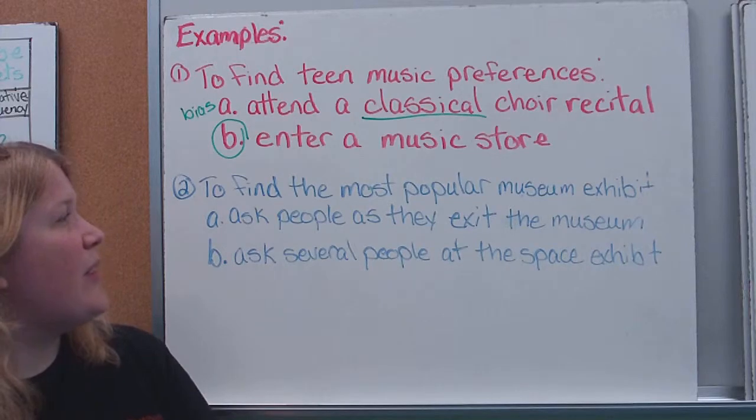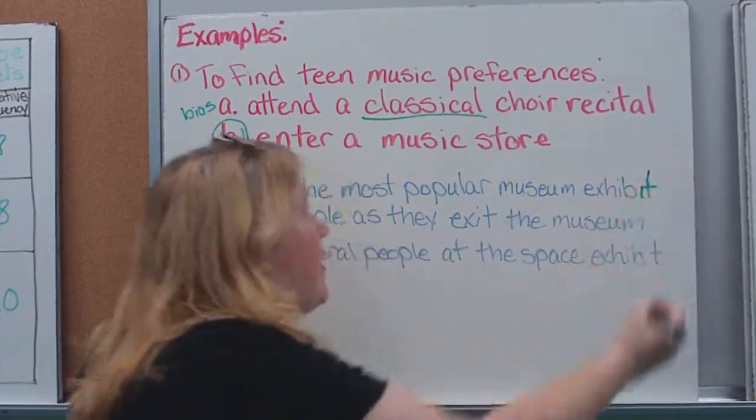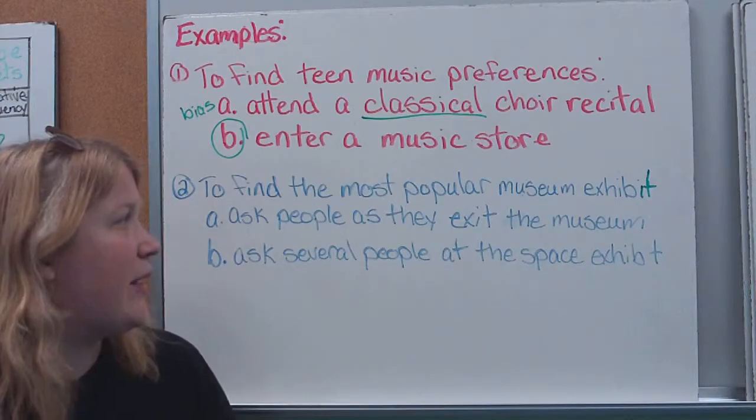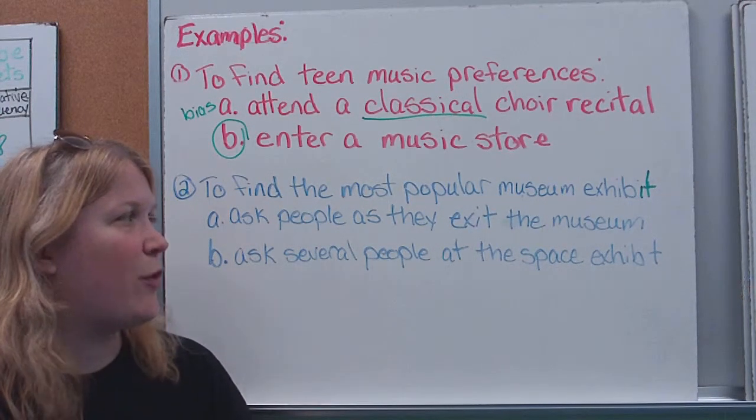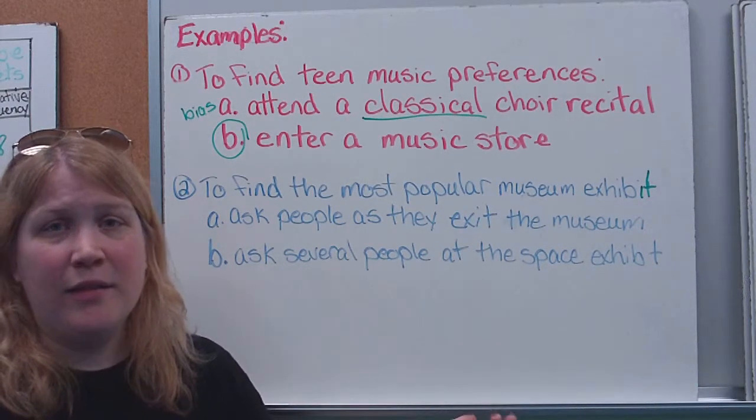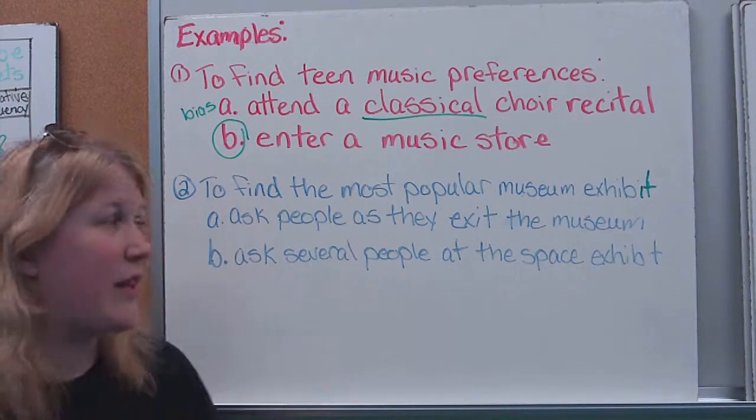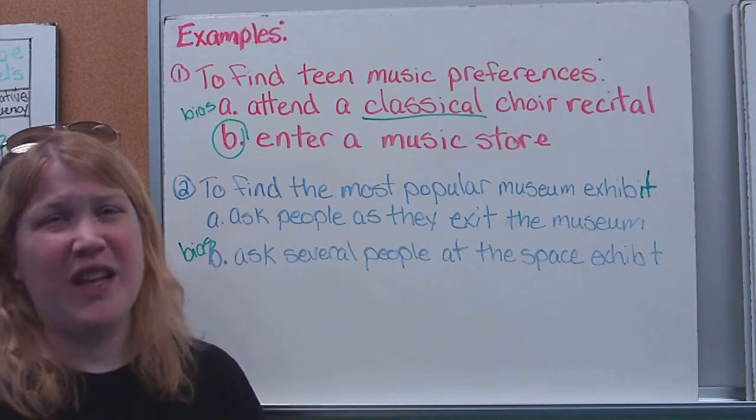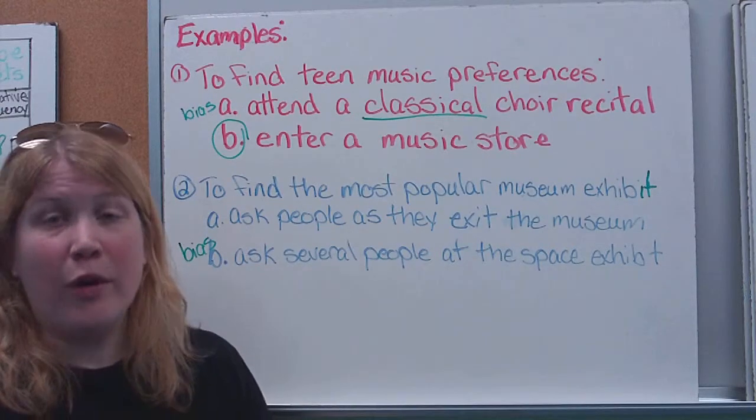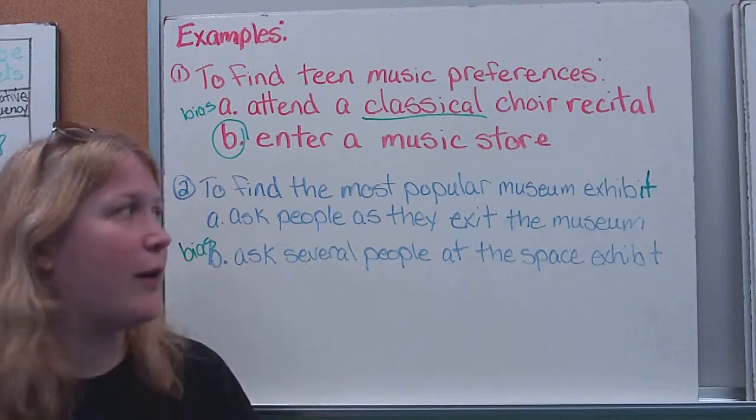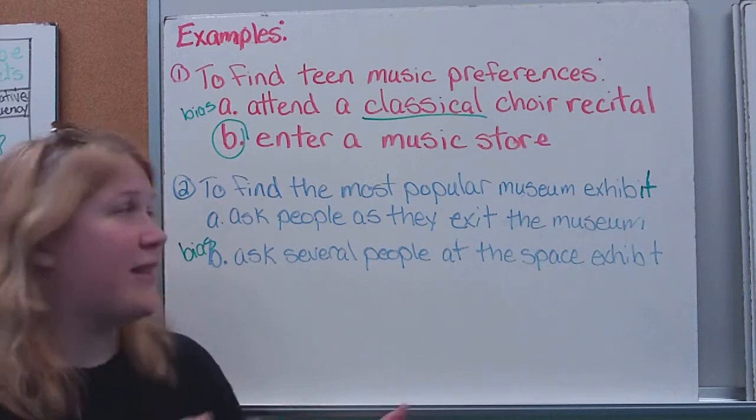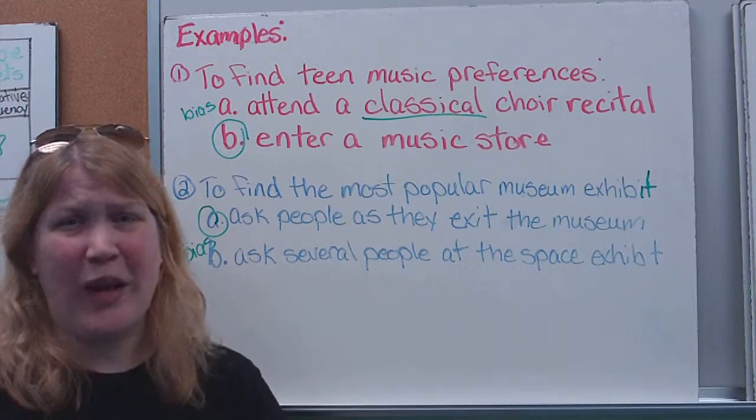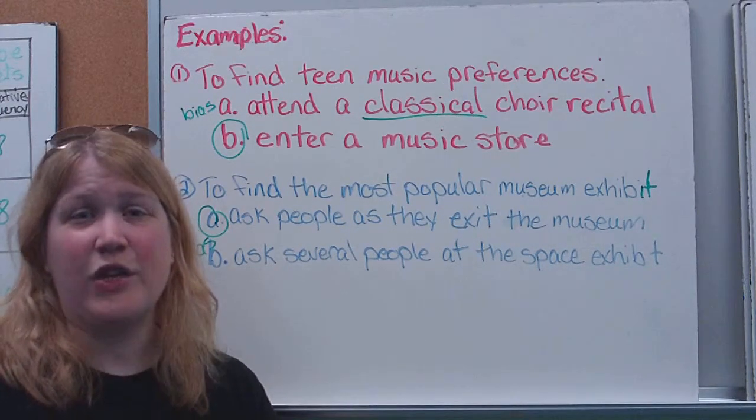All right. Our second example. If we wanted to find the most popular museum exhibit, what's the best way for me to find out unbiased or a random sampling of people here? Should I ask people as they exit the museum or should I ask several people who are at the space exhibit? Well, people are already at the space exhibit. That's probably something that they enjoy. So, again, here we see a bias. If I ask people who are at the space exhibit, even if it's not their favorite, they might be more likely to say that just because they're there. Or it might be their favorite. They specifically went to see it. So, that would be a very biased way of getting it. Whereas, just as people randomly exit, if I'm asking them, they can stop. They can think about everything that they've seen. And it would be better for me to get them on the way out than the way in because there might be something specific they were going to see and then they found out they enjoyed another one later.